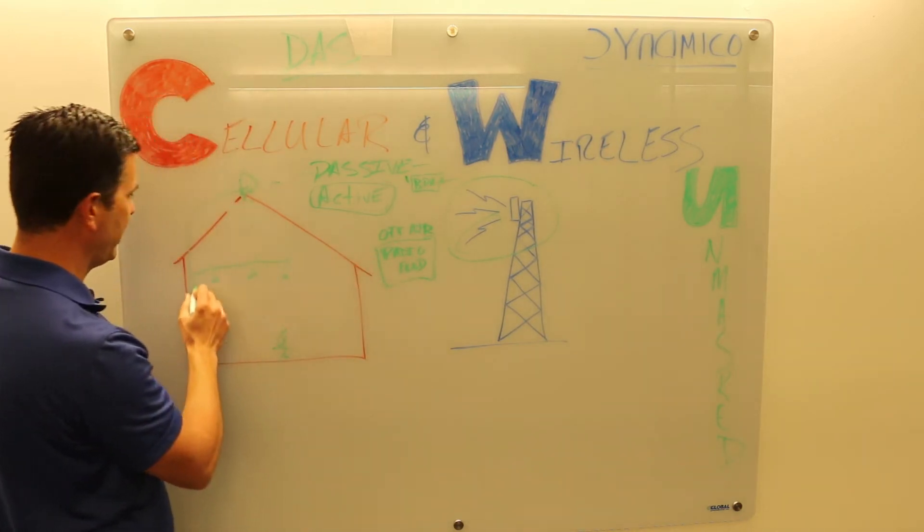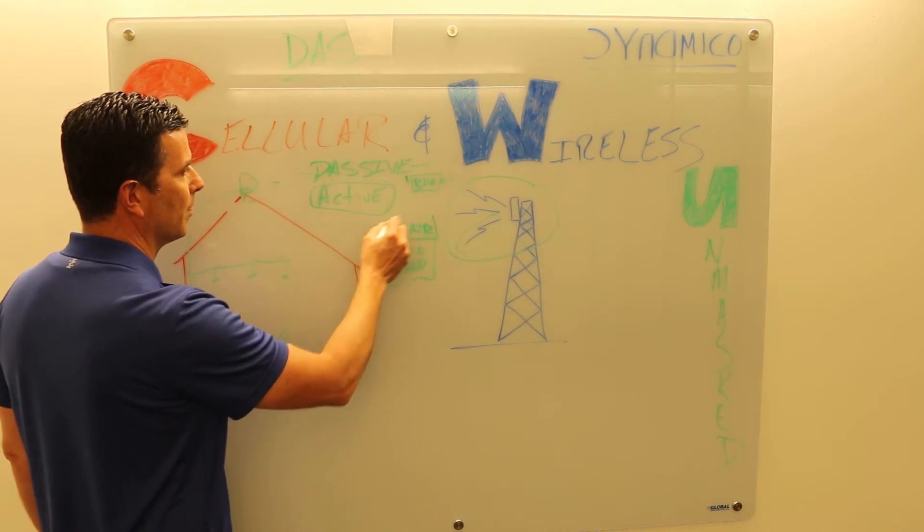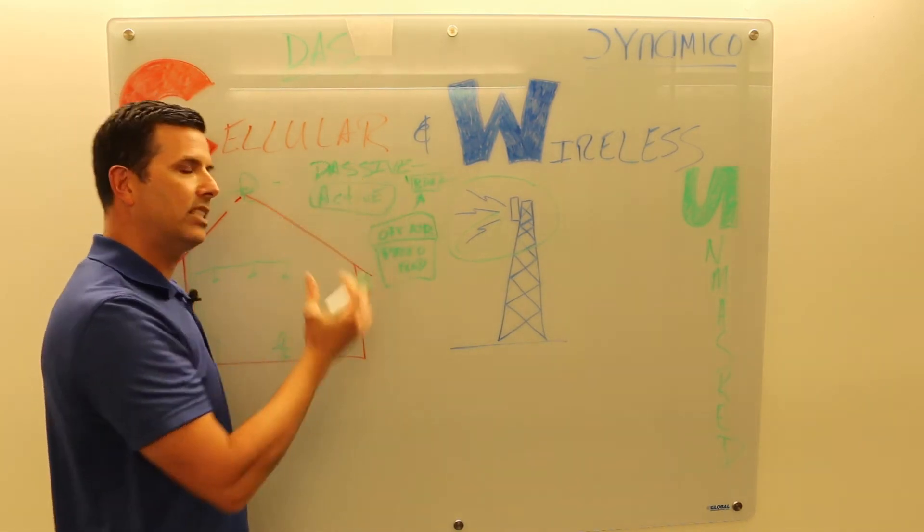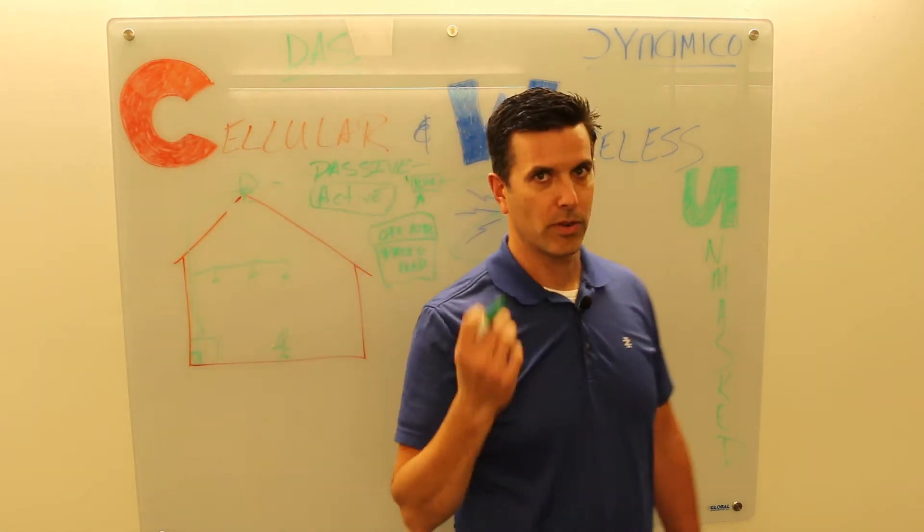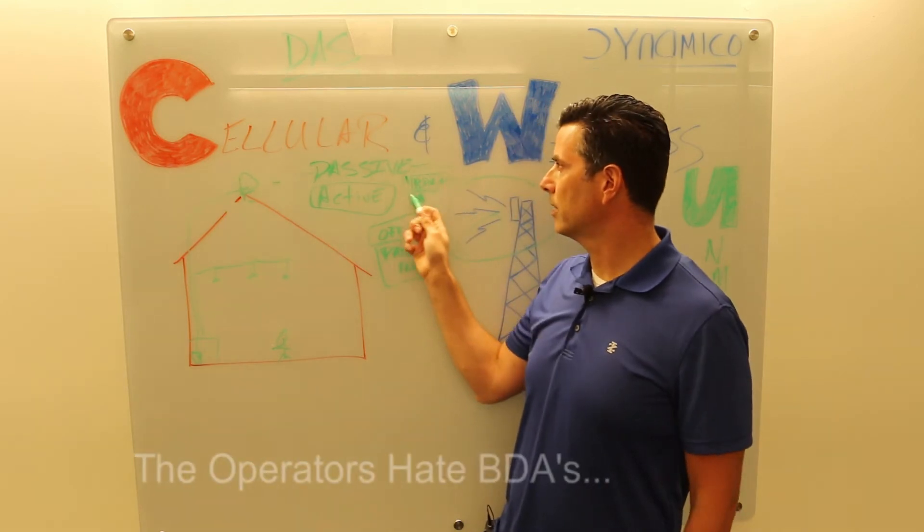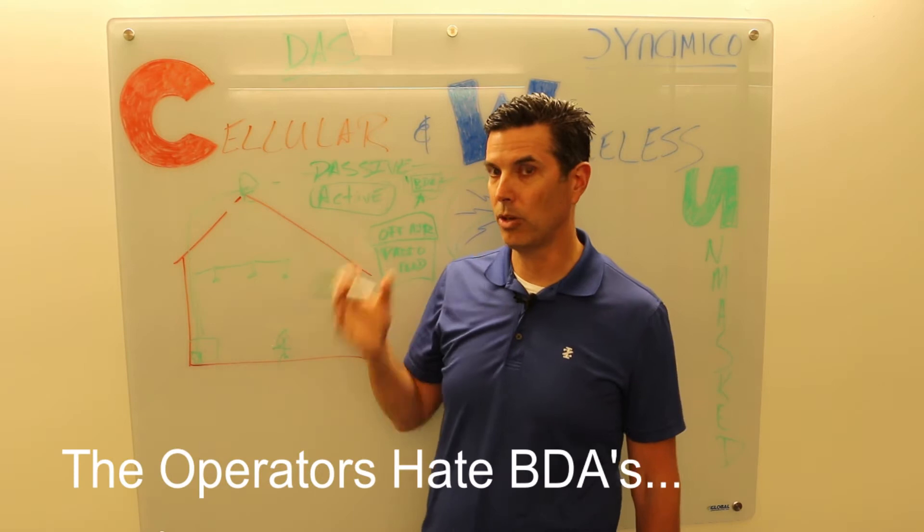A rooftop antenna pulls this signal down to this repeater, it gets repeated, it gets boosted, and then it gets distributed throughout the building. That's your off-air, off-air system uses a BDA. The cellular providers, your AT&T, your Verizon and your T-Mobile, don't like these.